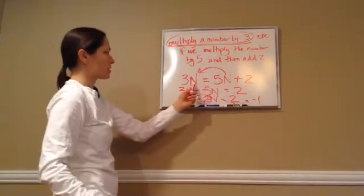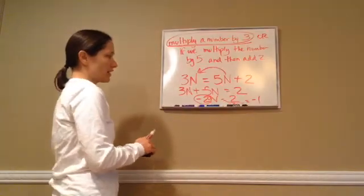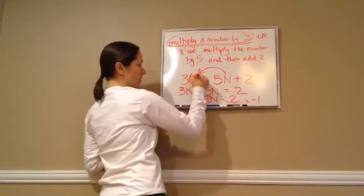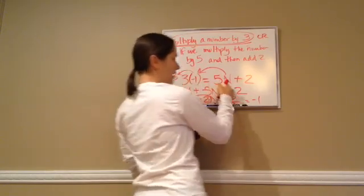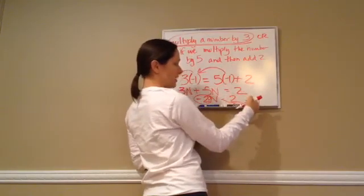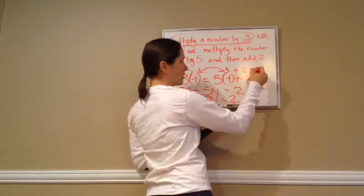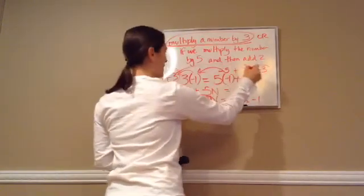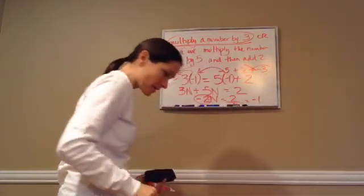Put negative 1 into both sides to check. 3 times negative 1 is negative 3. And on the other side, 5 times negative 1 is negative 5, plus 2 is negative 3. Negative 3 equals negative 3 — they're equal. That's what they're demonstrating. That is Lesson 32.